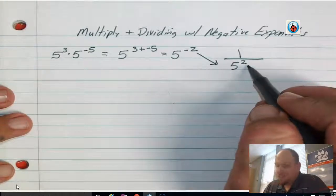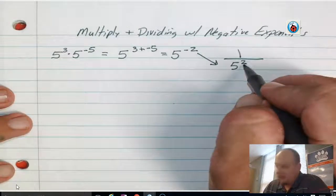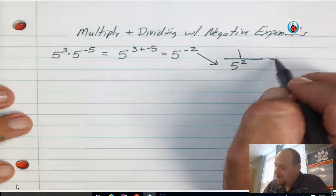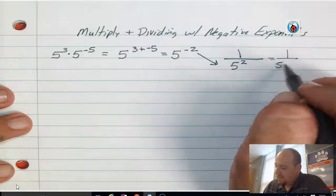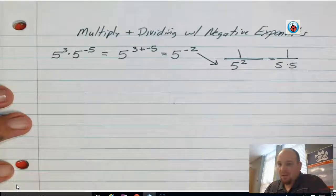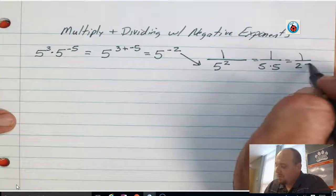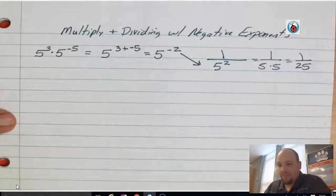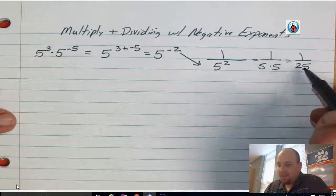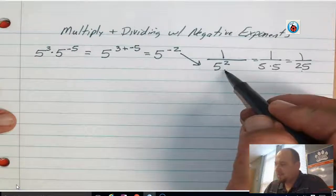Which if I simplify this down further and evaluate it, 5 to the second is 5 times 5. So really, I end up with 1 over 5 times 5, which is really equal to 1 over 25. So this is your evaluation answer. This is your simplifying answer.